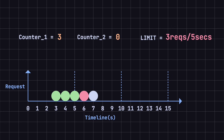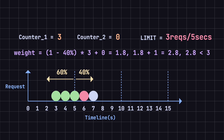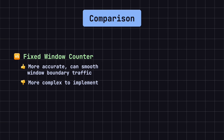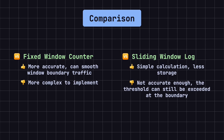This shows that even though the current window's request count is below the threshold, the system still rejects the request by considering the load from the previous window. At the seventh second, the system receives another request. This is at 40% of the current window, with the current window counter at zero. The calculation is: weight = (1 - 40%) × 3 + 0 = 1.8. Then 1.8 + 1 = 2.8, which is below the threshold of 3, so the system accepts this request, and the current window counter increases to 1. Compared to the fixed window counter algorithm, the sliding window counter algorithm is more precise and smooths out traffic at window boundaries, but it is more complex to implement. Compared to the sliding window log algorithm, it is simpler to calculate and requires less storage. However, it is not as precise as the sliding window log algorithm, and requests can still exceed the threshold at window boundaries. Overall, it is a compromise between the fixed window counter and sliding window log algorithms.